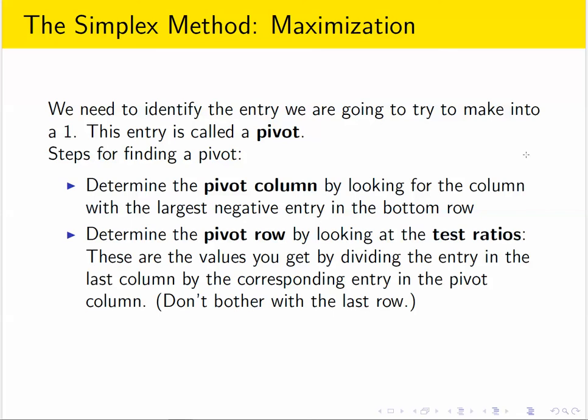And whichever one is smallest is the one you use as the pivot row. You don't bother with the last row. You only look at the rows that correspond to constraint inequalities from your original problem.